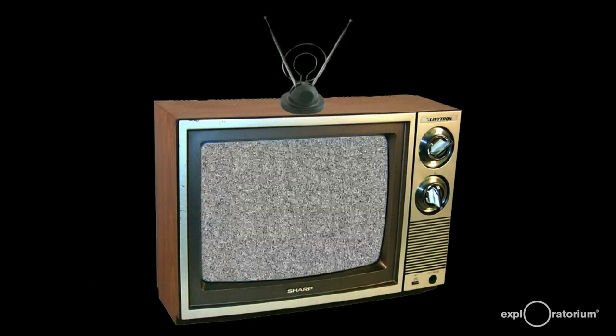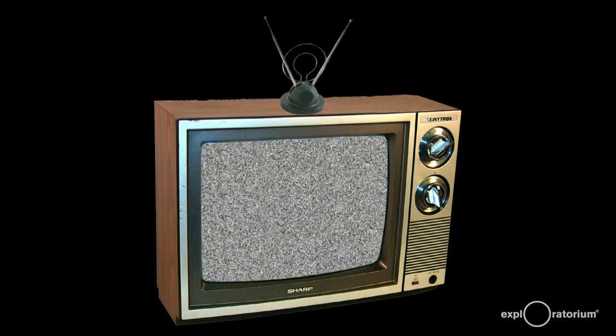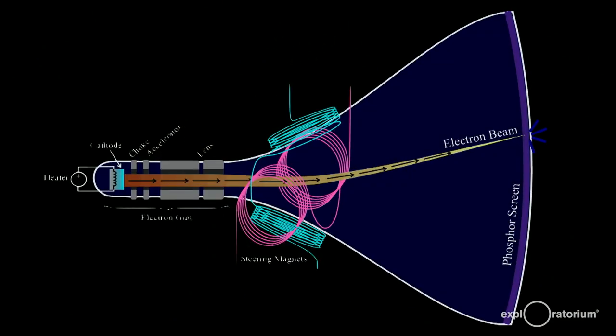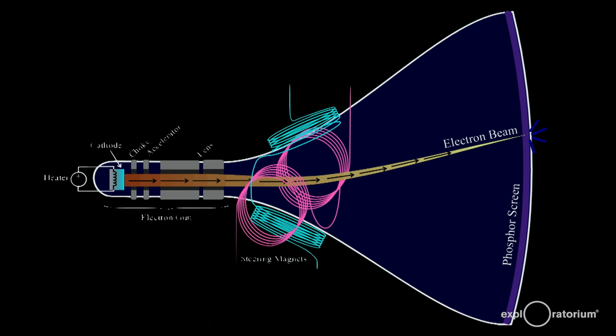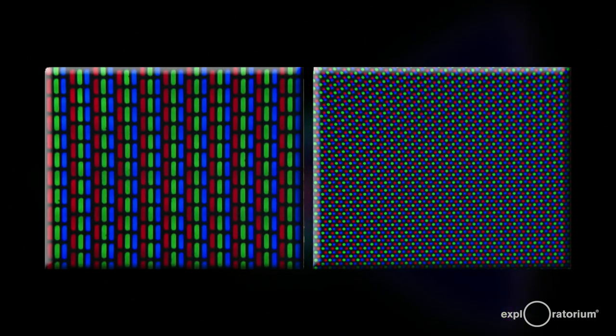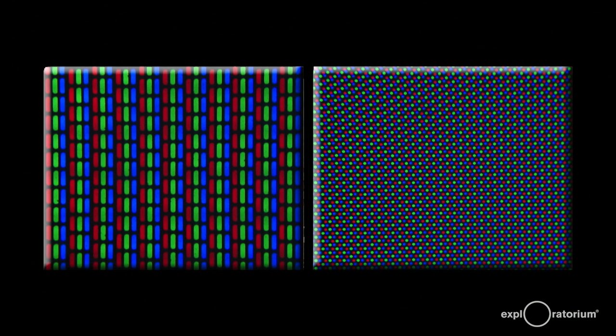The old-style tube televisions worked by fluorescence. Here's a cross-section of the tube, called a cathode ray tube. An electron beam was focused and deflected by coils, striking the phosphor-coated screen on the right. This caused the phosphors to glow or fluoresce. In color televisions, three phosphors — red, green, and blue — were coated on the face of the screen. The arrangements of the colored phosphors differed depending on the brand of TV, and by hitting on the right combinations, you could build up a picture with any color.